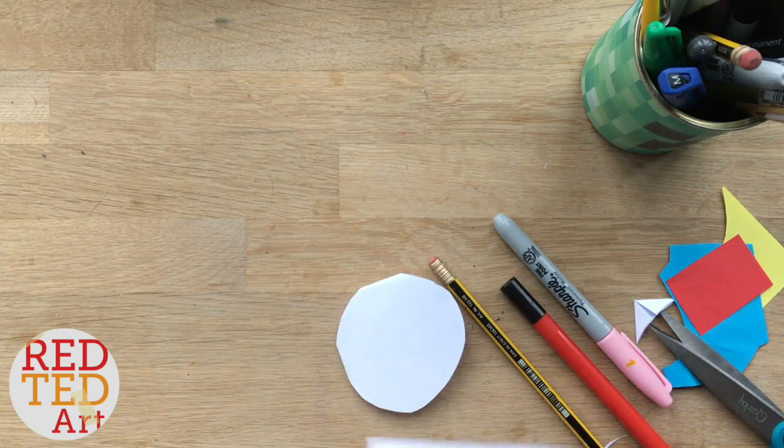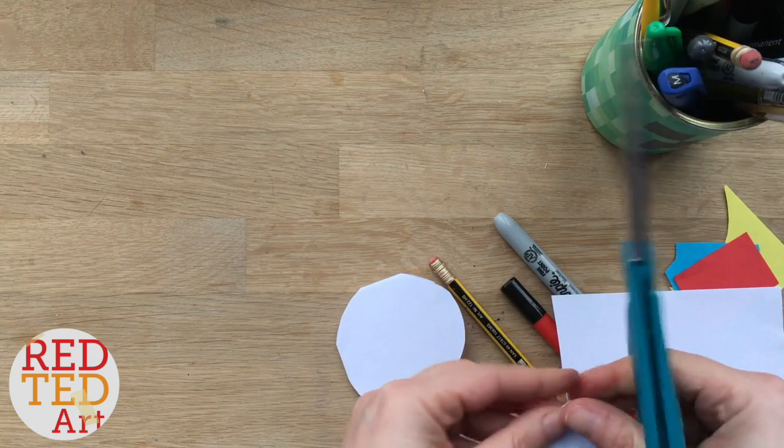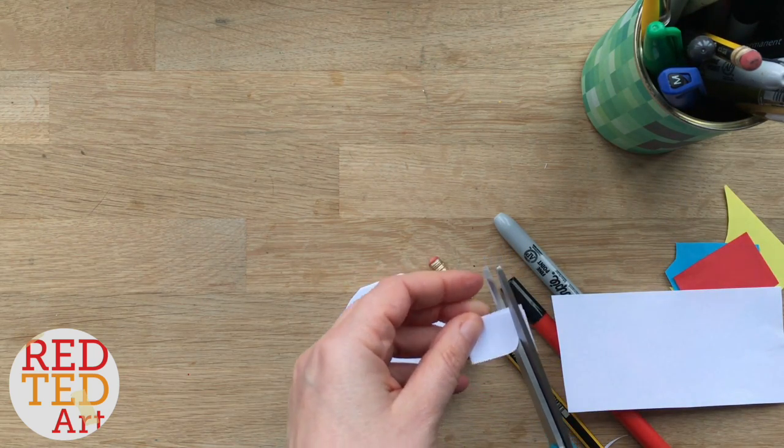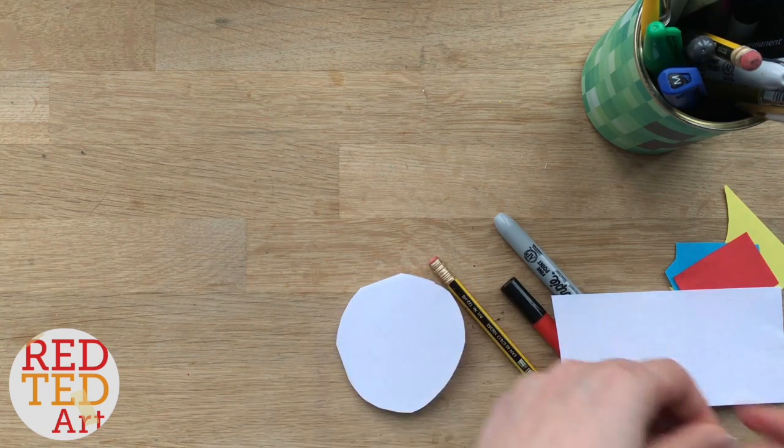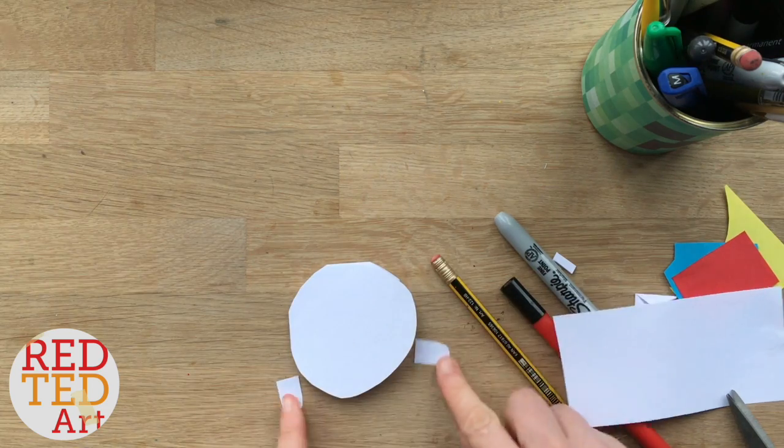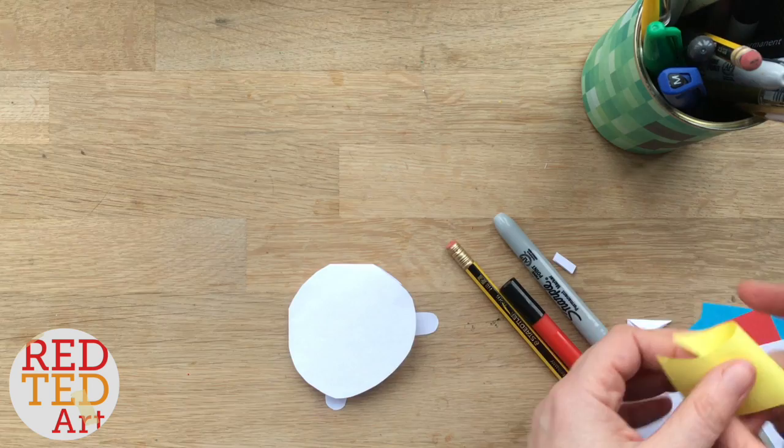Now I need two little feet so I'm going to take my little scrap piece of paper back, fold it over, cut two rectangles with a rounded top. There we go. And then I can glue these on. Now the Tsum Tsum feet sort of stick out to the side a little bit but we'll stick it all on at the end I think.